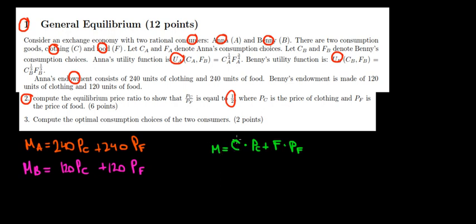In this case we can spend money on clothing and food. For clothing we pay the price of clothing; for food we pay the price of food. The budget constraint for Anna is: 240 times PC plus 240 times the price of food. For Benny it is: 120 times the price of clothing plus 120 times the price of food.